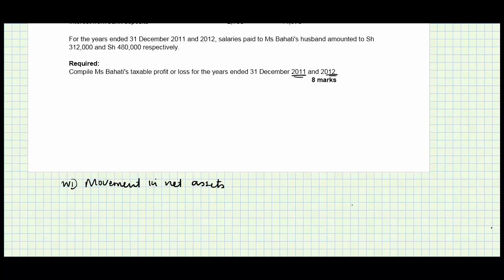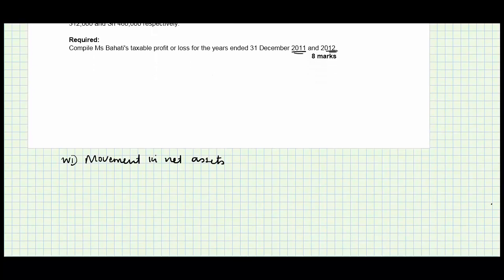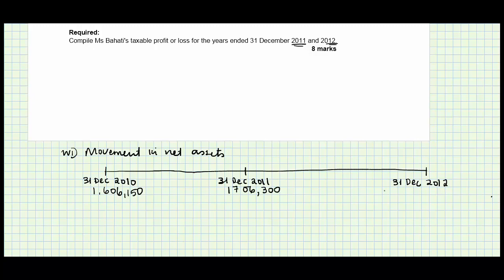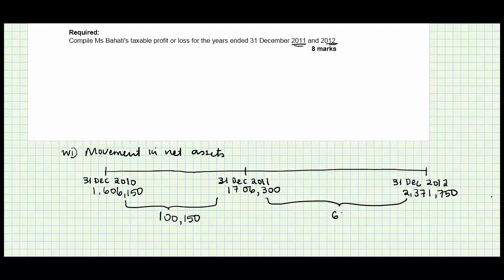Here we are not having to draw the capital statement showing all the assets and liabilities. You can just draw a timeline showing the balance on 31st December 2010, 31st December 2011, and 31st December 2012. In the year ended 2011, the movement is an increase of 100,150, and in the year ended 2012, the movement is 665,450. That is the first thing we have to do.